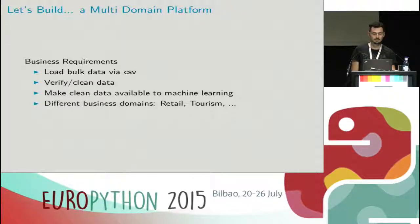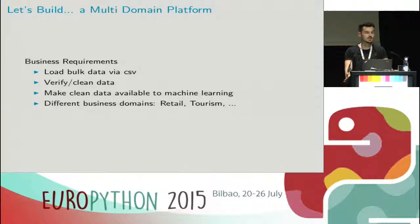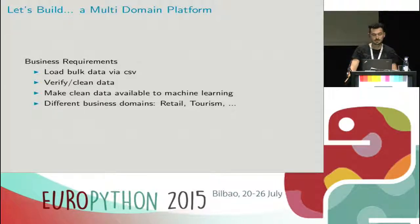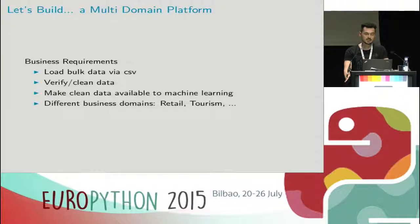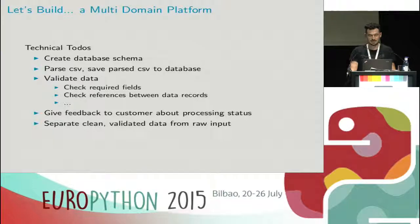So let's build a multi-domain platform. What do we have to do? What do our customers expect from us? We have to load the bulk data via a CSV file — this is what I will show in my example — or in real life, we also use XML files. We get that into the system via HTTP interface, via POST requests. We have to verify that data. We've had several talks already regarding big data, which is not always clean and can be quite messy. Our machine learning needs clean, validated data. And we use it for different business domains: currently retail, tourism, and other areas.